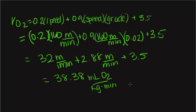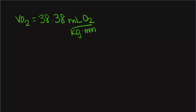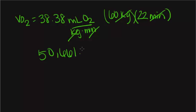Once we have our VO2 uptake, we need to convert it to calories. We know the woman weighed 60 kilograms and had been running for 22 minutes. If we multiply these by the value we got for our VO2 uptake, we can cross out our units and get 50,661.6 milliliters of O2.